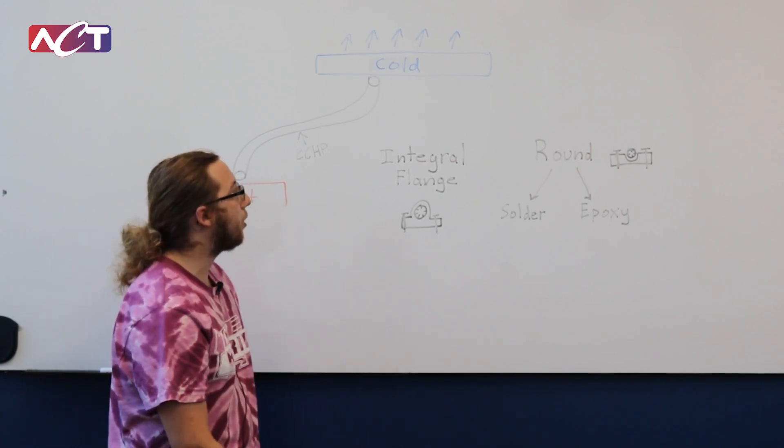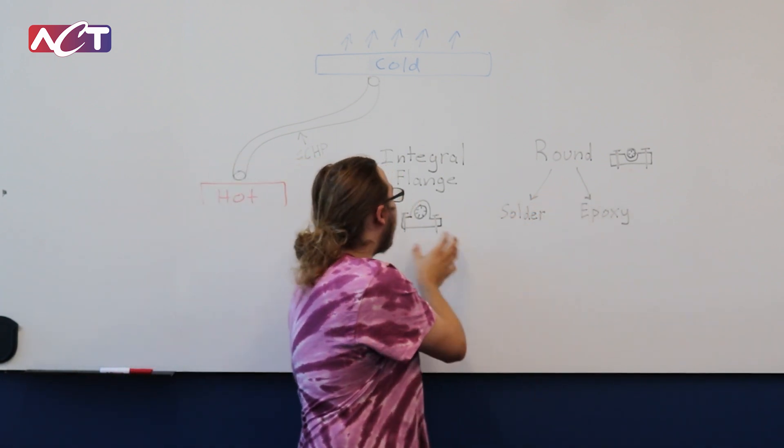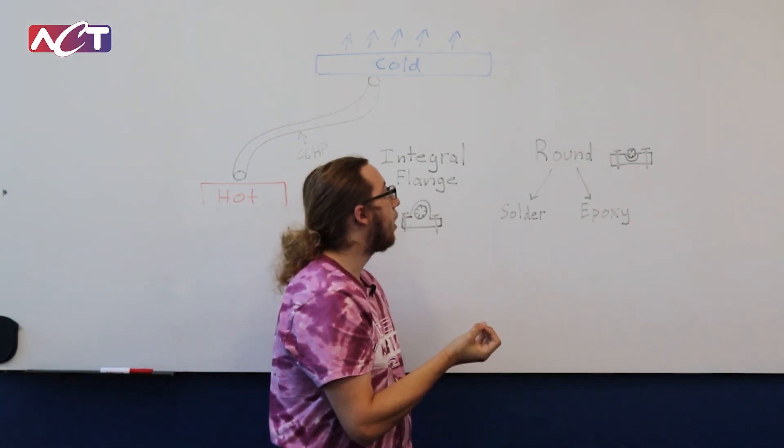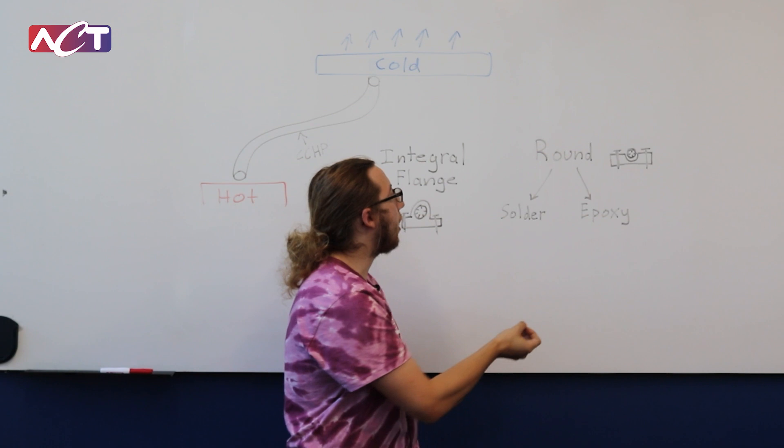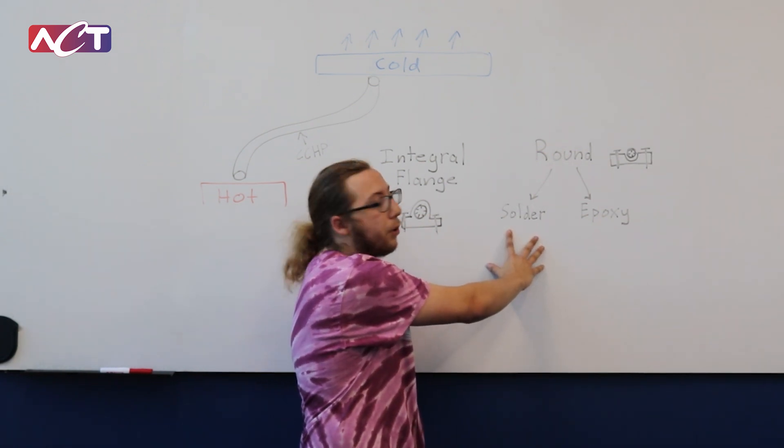The second option is to use a round extrusion. So this would not have the flange built into it, rather it would just be a round pipe. And then you can either solder that round pipe into a block that you would bolt through.